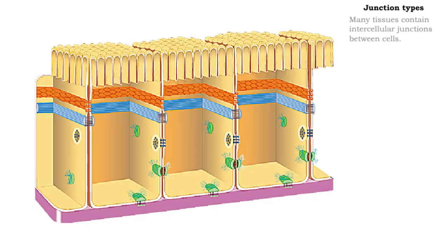The cells of many tissues are joined together by intercellular junctions that are located between the adjacent cells. Most types of epithelium and some types of muscular and nervous tissue contain intercellular junctions.